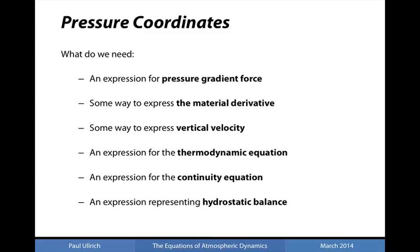We needed an expression for pressure gradient force, which was derived last time, but now we need some way to express the material derivative and some way to express vertical velocity. Recall that currently we are using vertical velocity w, defined as the change in vertical height z following a fluid parcel. Since we are now working on pressure-based vertical coordinates, it may not be appropriate to use vertical velocity in height coordinates. We also need an expression for the thermodynamic equation using the hydrostatic balance assumption, an expression for continuity or conservation of mass, and an expression representing hydrostatic balance in a vertical pressure coordinate.